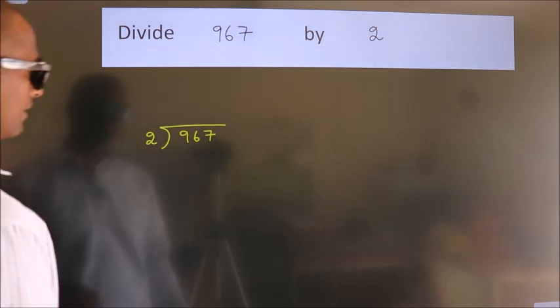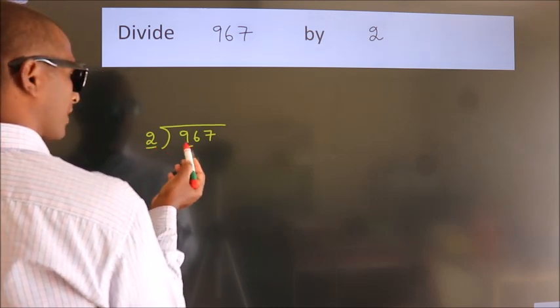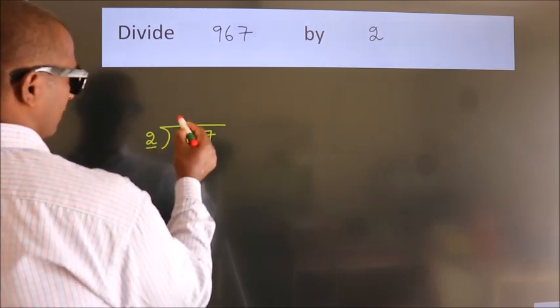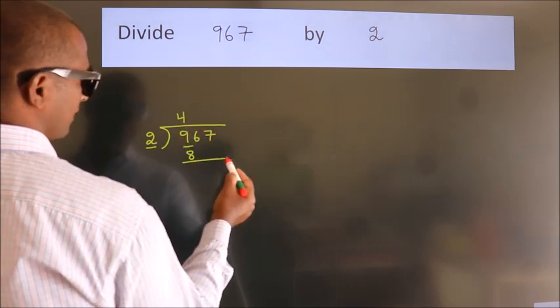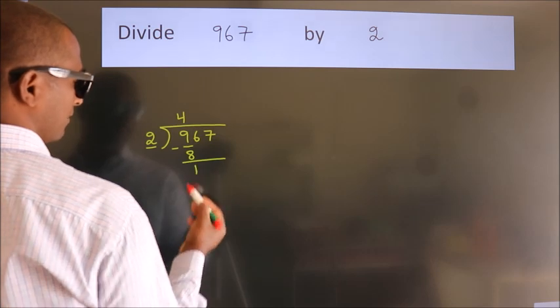Next. Here we have 9. Here 2. A number close to 9 in the 2 table is 2 times 4 equals 8. Now we should subtract. We get 1.